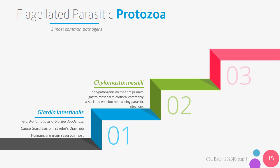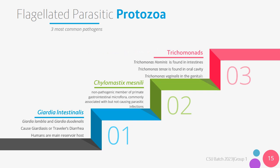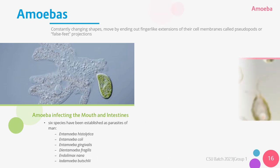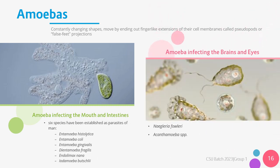Trichomonads includes Trichomonas hominis, found in the intestines, Trichomonas tenax, found in the oral cavity, and Trichomonas vaginalis, which is found in the genitals. The third member under protozoan parasites are amoebas. These organisms are constantly changing shapes and move by sending out finger-like extensions of their cell membranes called pseudopods, or false foot projections. Amoeba will infect different parts of the host body. Six species have been established as parasites of humans and infect the mouth and intestines, including Entamoeba histolytica, Entamoeba coli, Entamoeba gingivalis, Dientamoeba fragilis, Iodamoeba buetschlii, and Endolimax nana.